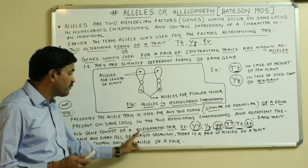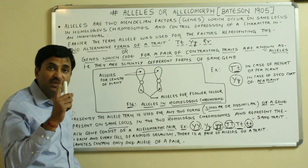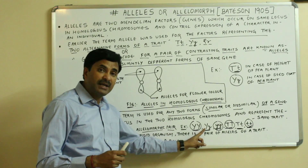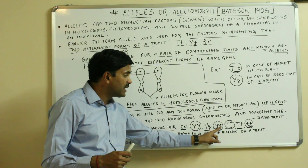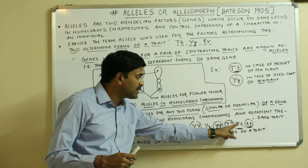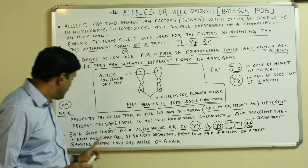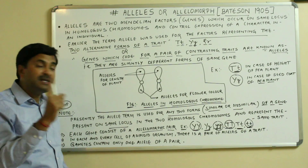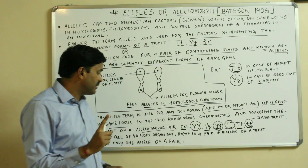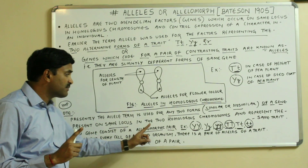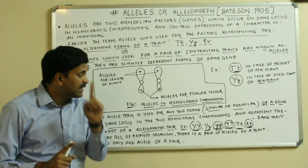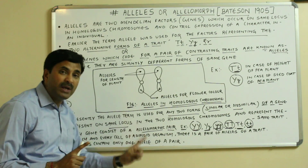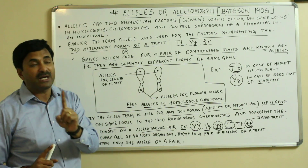Each gene consists of an allelomorphic pair. In a diploid organism there is always a pair of alleles for a particular trait, but gametes contain only one allele of a pair.